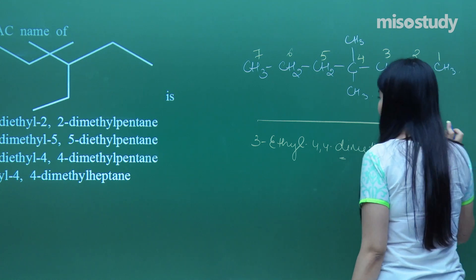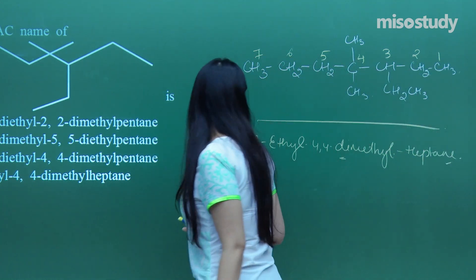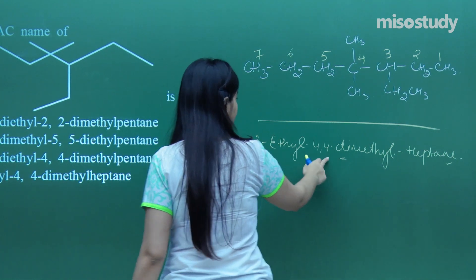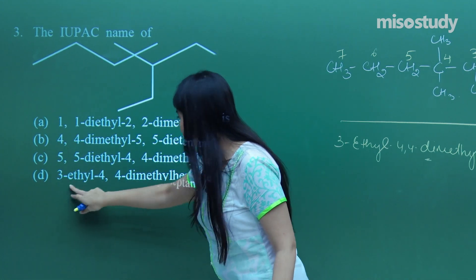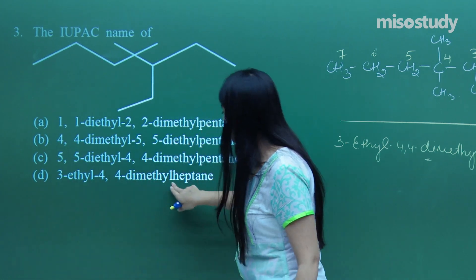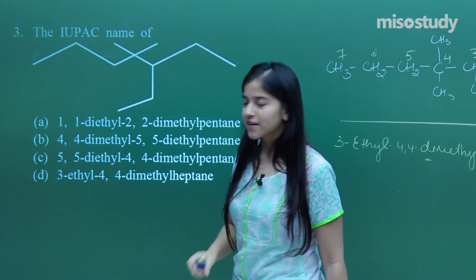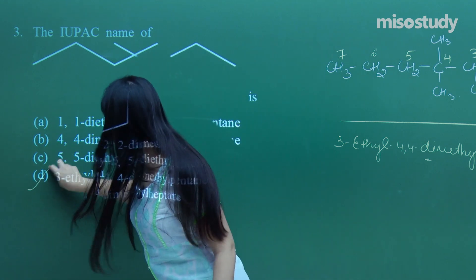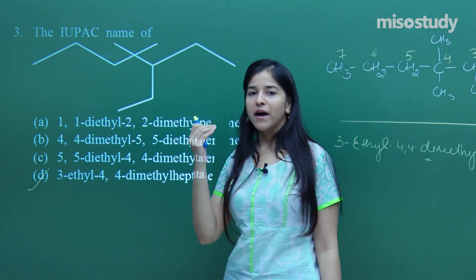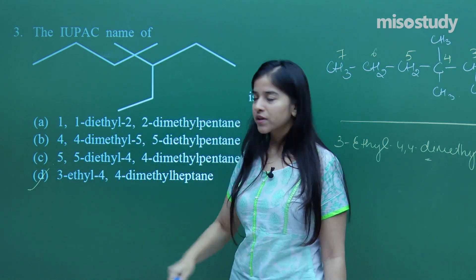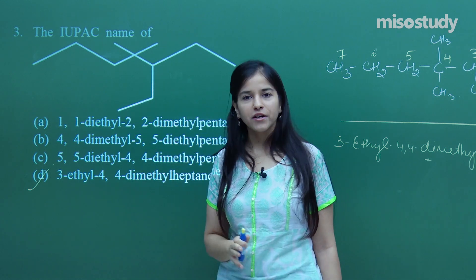Let us just match our answer from the options. It's 3-ethyl, 4,4-dimethylheptane — can you see it anywhere? Yes, 3-ethyl-4,4-dimethylheptane is our answer. I hope everybody has got it. You do not need to analyze options — just go for the IUPAC name directly.